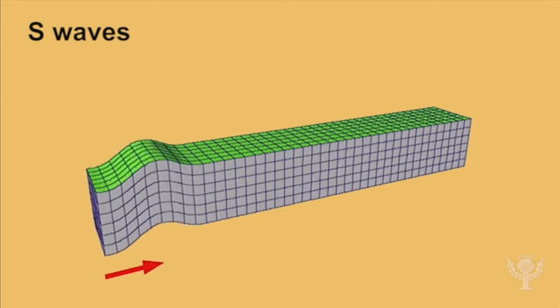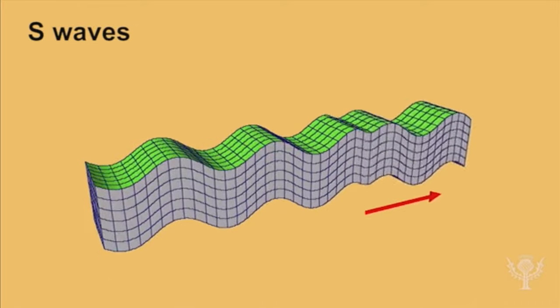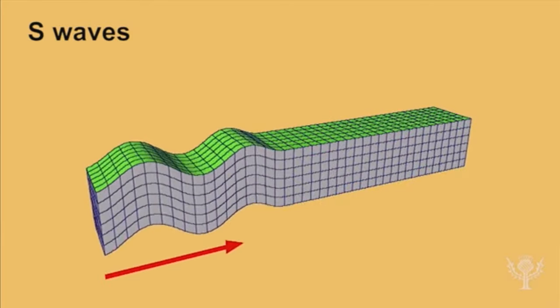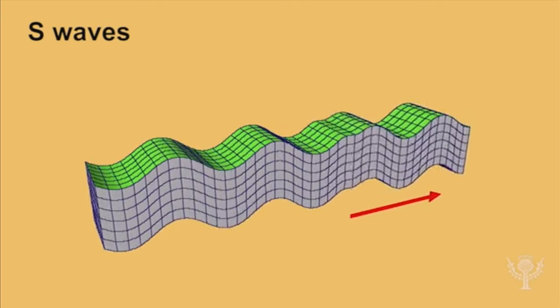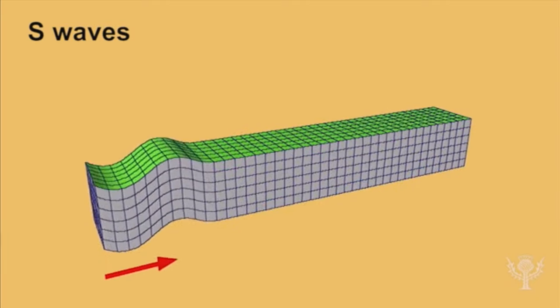S waves shake the ground in a shearing or crosswise motion that is perpendicular to the direction of travel. These are the shake waves that move the ground up and down or from side to side. S waves are called secondary waves because they always arrive after P waves at seismic recording stations.